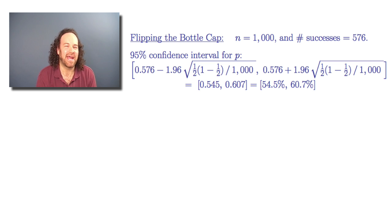So we can say we're 95% confident that the true value of p when you flip that bottle cap of getting red is within this interval.